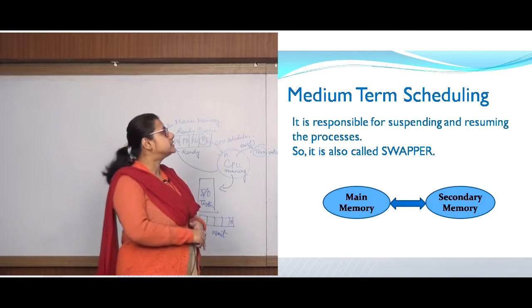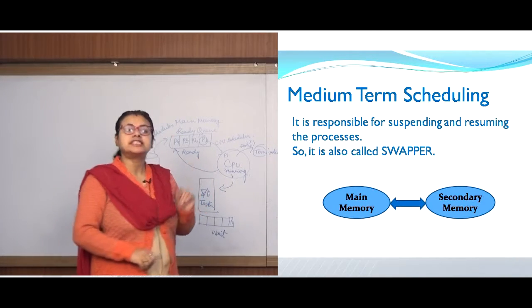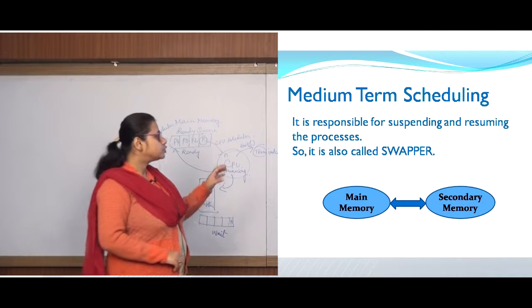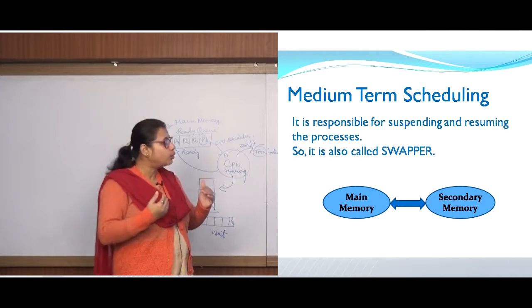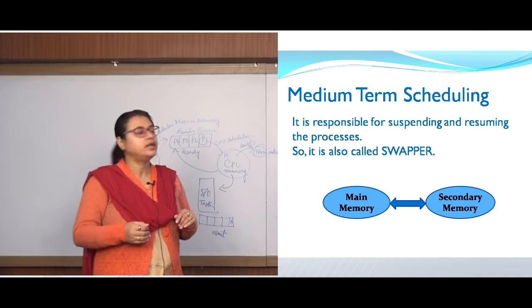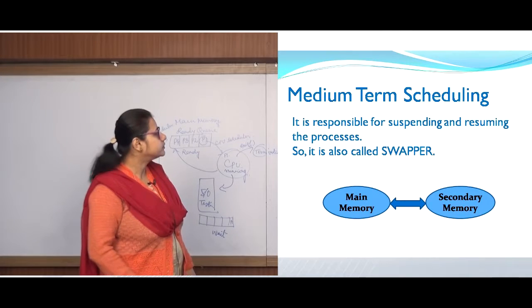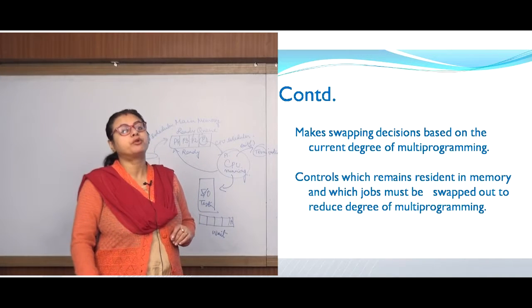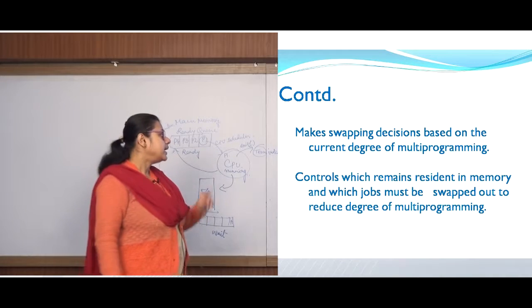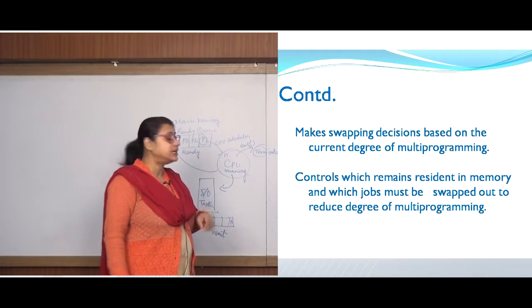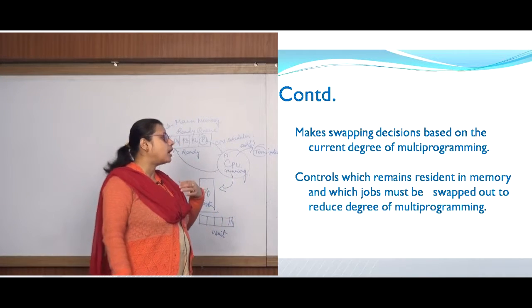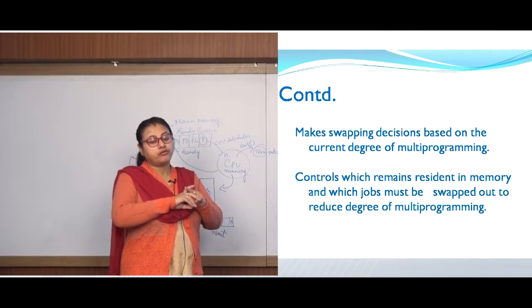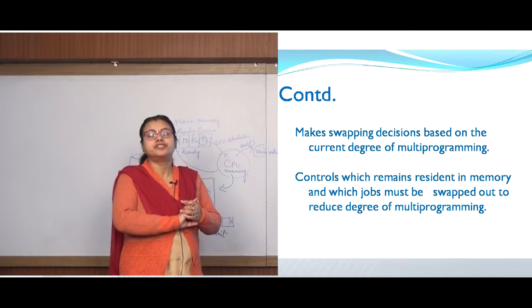The next type of scheduler is the medium term scheduler. It is responsible for suspending and resuming processes, which is why it is also called a swapper. When processes are swapping in and swapping out between the main memory and secondary memory, the swapper plays its role. It makes swapping decisions based on the current degree of multiprogramming — how many processes are now in your ready queue — and controls which processes remain resident in main memory and which must be swapped out to reduce the degree of multiprogramming.